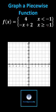This is the horizontal line passing through y equals four, but only when x is less than negative one. We make an open point at negative one comma four and then graph to the left.